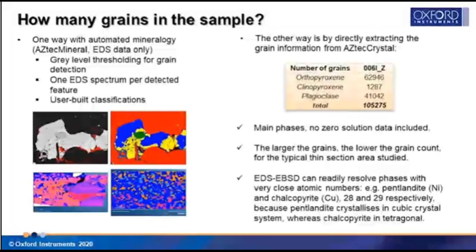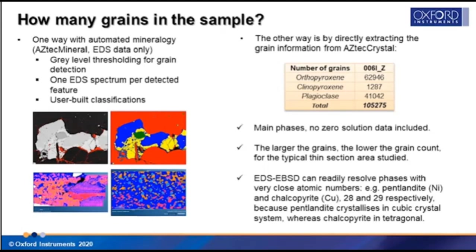Another question readily addressed with EBSD data is the number of grains in a sample — simply filter the dataset by phase. Commonly we ignore grains smaller than 10 pixels. Grain count is routinely given by automated modal mineralogy, which uses EDS data only and image analysis software for grain detection based on thresholds set by the user. However, when resolving similar phases the combination of EDS with EBSD in situ analysis is powerful, using both chemical and structural criteria to separate phases such as kyanite and sillimanite, coesite and quartz, pyrite and marcasite, or the iron oxides goethite, hematite, and magnetite.